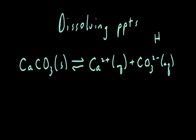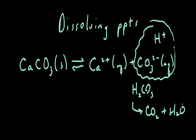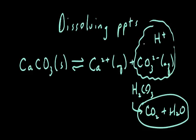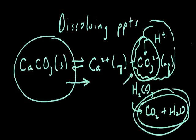For example, if we were to add an acid — H+ ions — to the saturated solution of calcium carbonate, when the H+ ions bump into the carbonates, they're going to create the weak acid H2CO3. The H2CO3 will promptly decompose into CO2 and water. Because the carbonate has now turned into carbon dioxide and water, the amount of carbonate ions present in the equilibrium is going to go down. Because the carbonate ions are now lesser, the reaction would respond by shifting to the right to replace them, and we would see the solid dissolve.